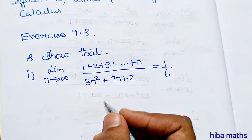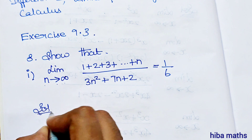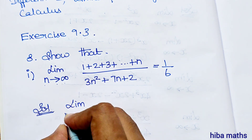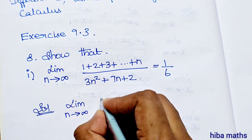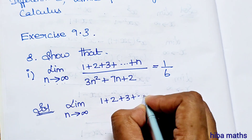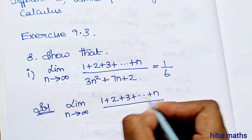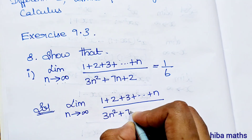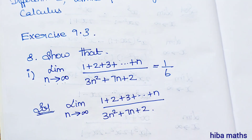This is a proof. We take the LHS and prove the RHS. Solution: take the limit as n turns to infinity of 1 plus 2 plus 3 up to n, divided by 3n squared plus 7n plus 2.